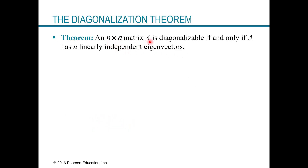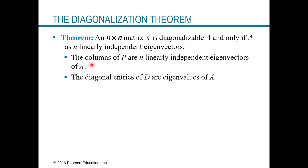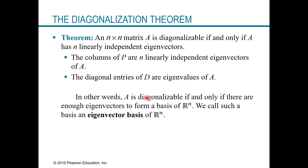Here's the theorem: an N by N matrix A is diagonalizable if and only if it has N linearly independent eigenvectors. Because this is an if-and-only-if statement, it goes both directions. The columns of P are N linearly independent eigenvectors of A, and the diagonal entries of D are eigenvalues of A. A is diagonalizable if and only if there are enough eigenvectors to form a basis of R^N — we call this an eigenvector basis of R^N.